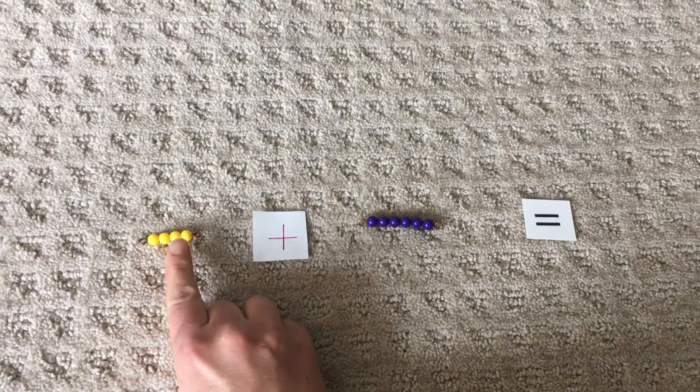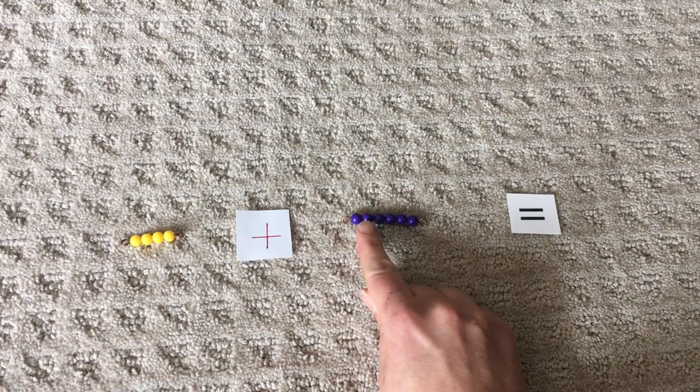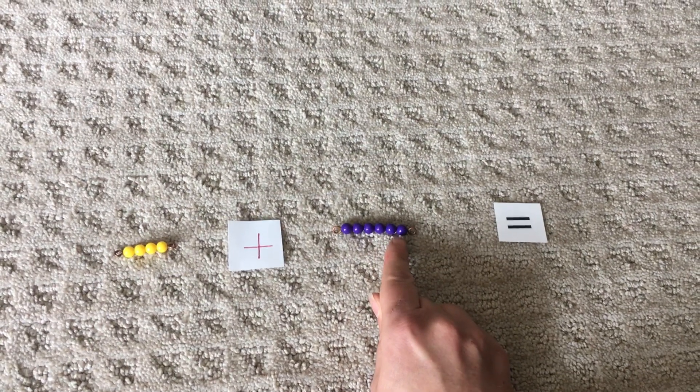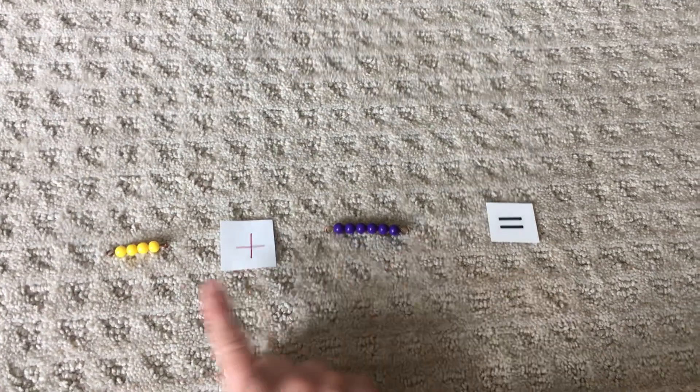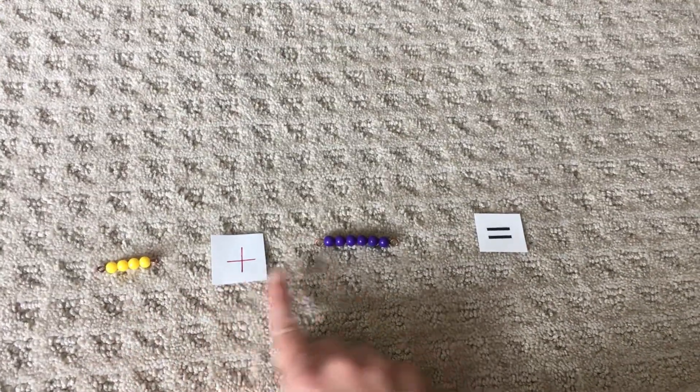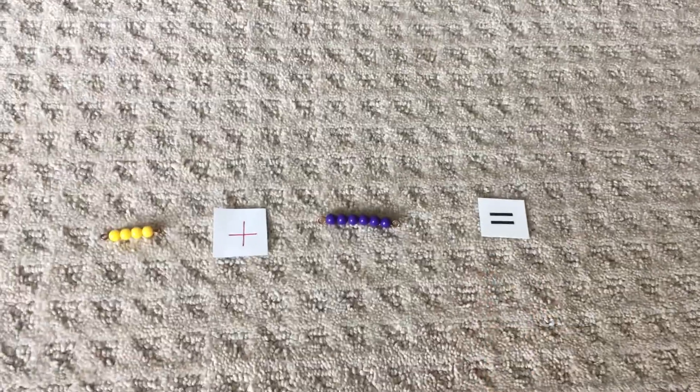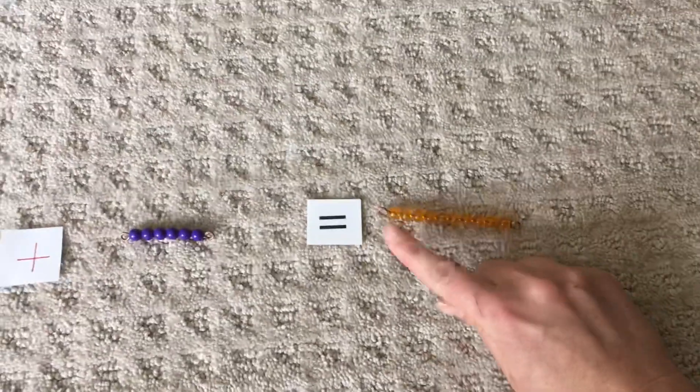One, two, three, four, five, six, seven, eight, nine, ten. So if we count them together, we get ten. So four plus six equals ten.